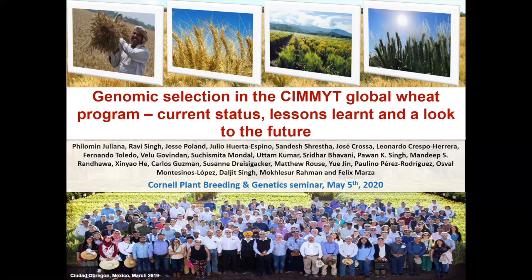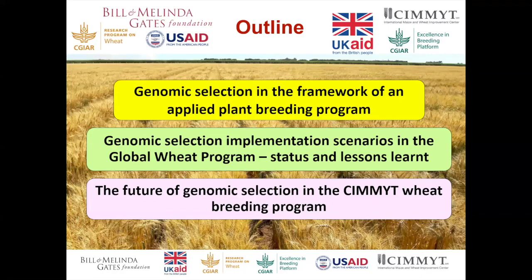Just an outline of what I'll be talking about today: genomic selection in the framework of an applied plant breeding program, what we do here, the different stages in the CIMMYT breeding program where we can implement genomic selection, what we've tested so far — the different populations, traits, and nurseries — and what we've learned, and the future of genomic selection in the CIMMYT Global Wheat program.